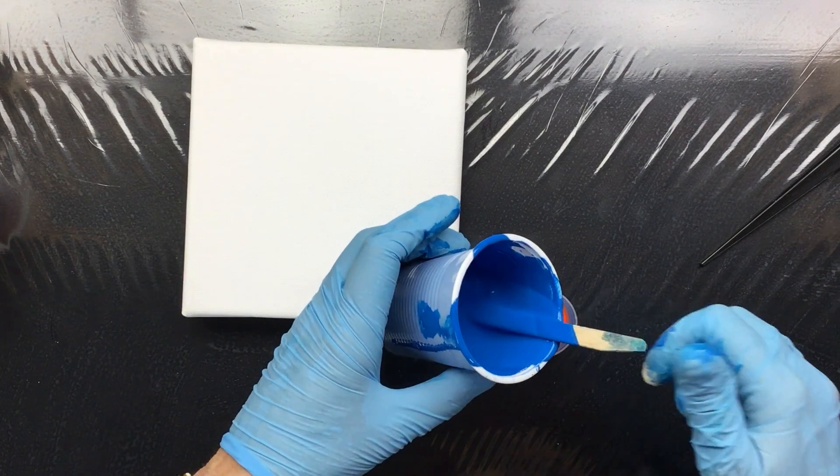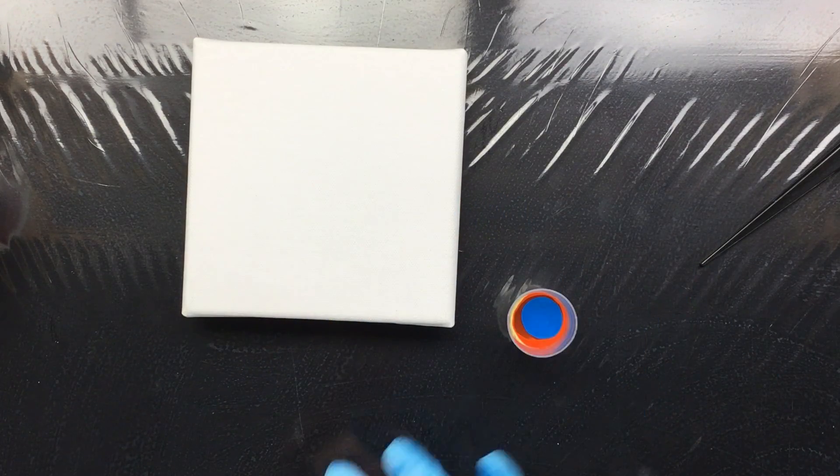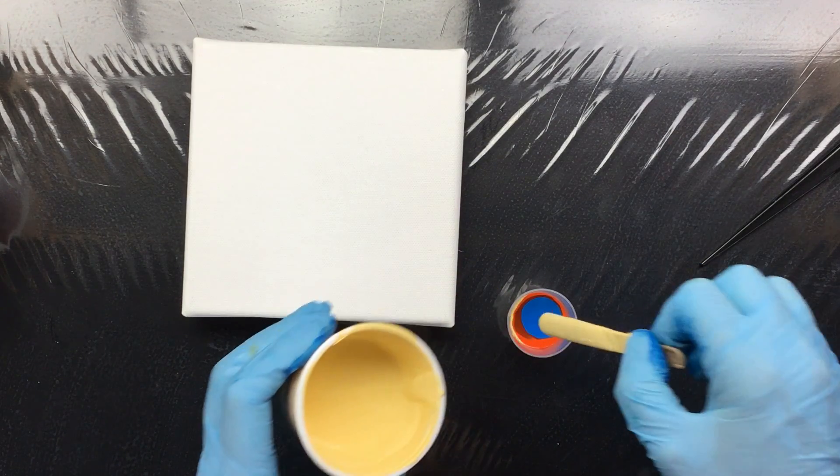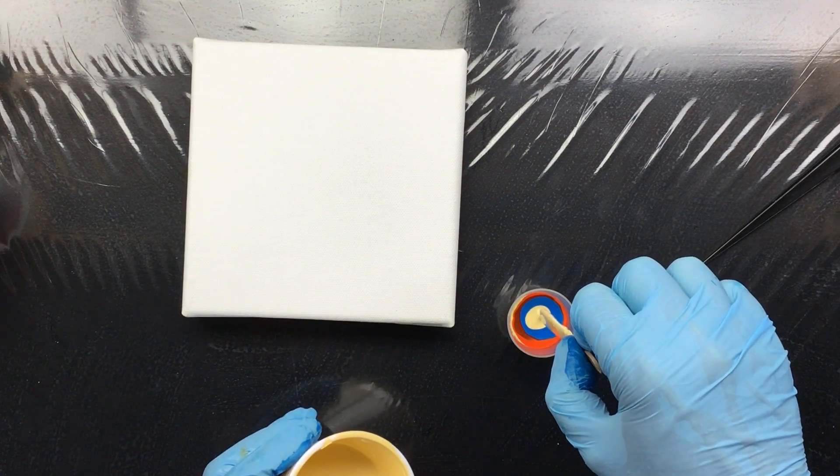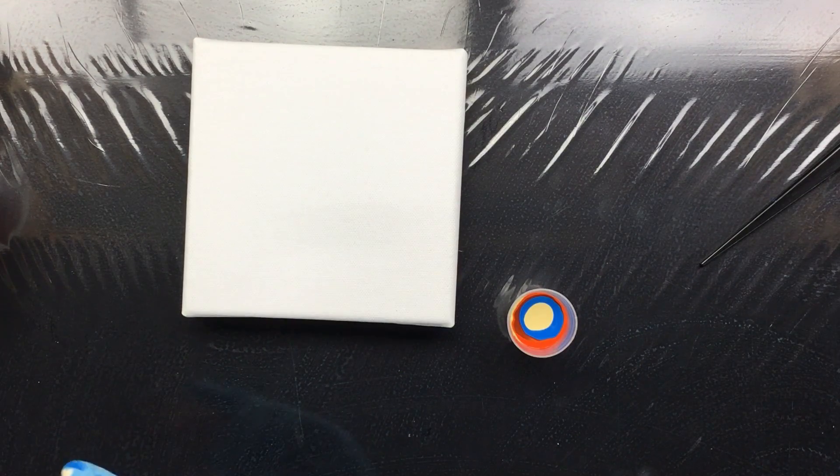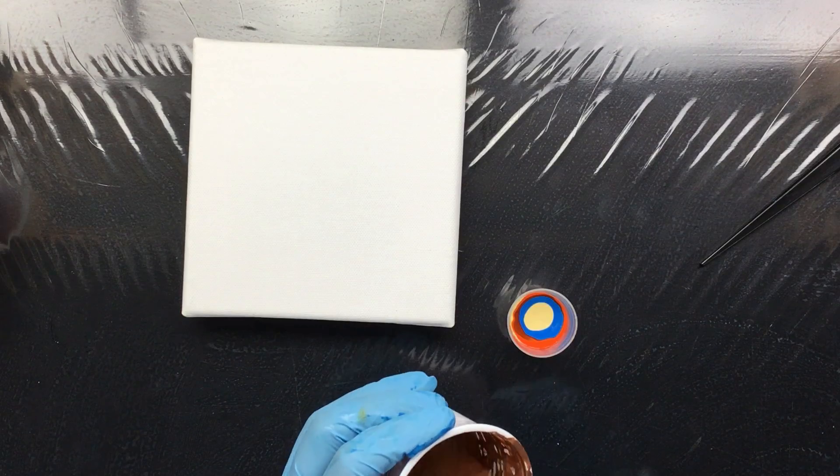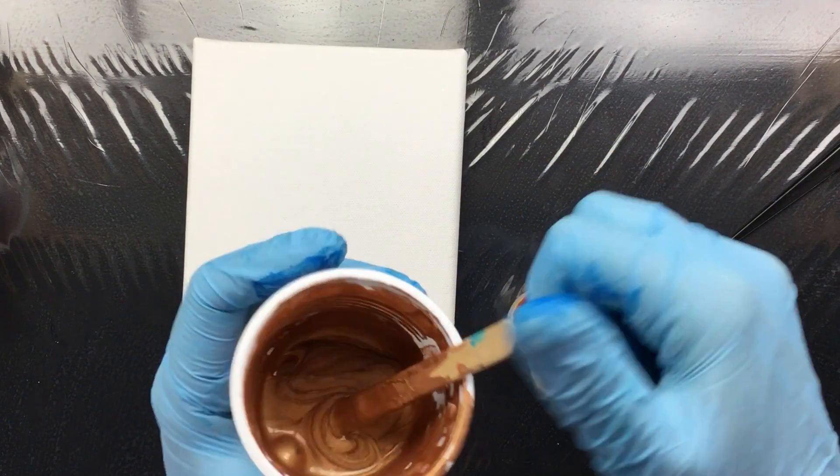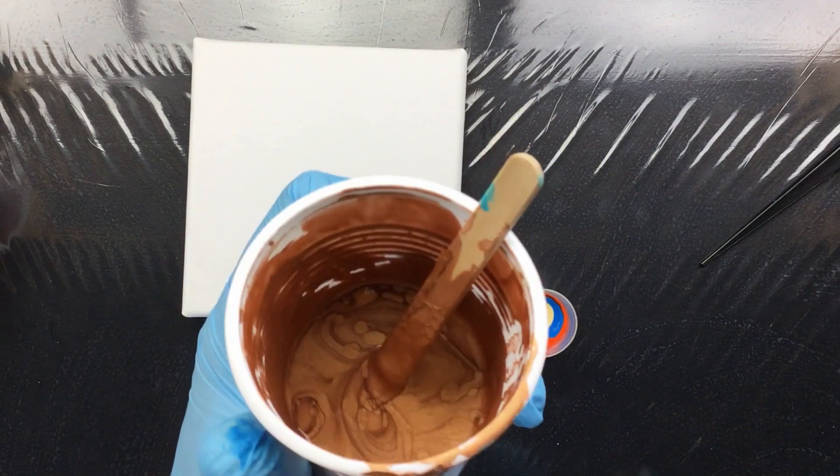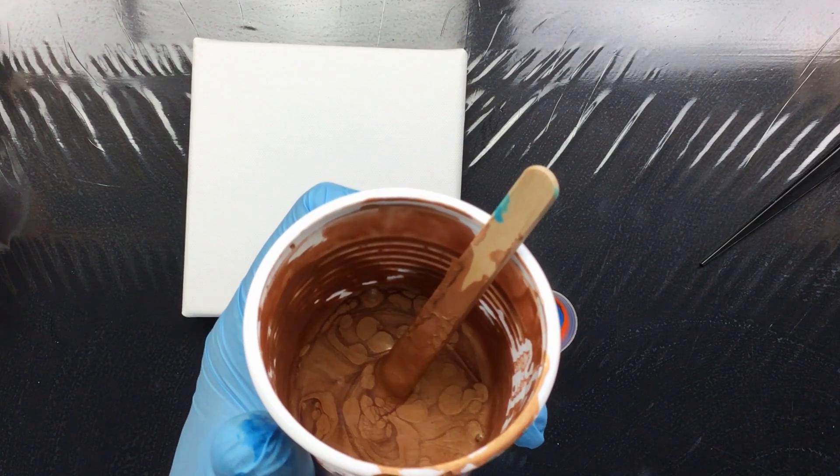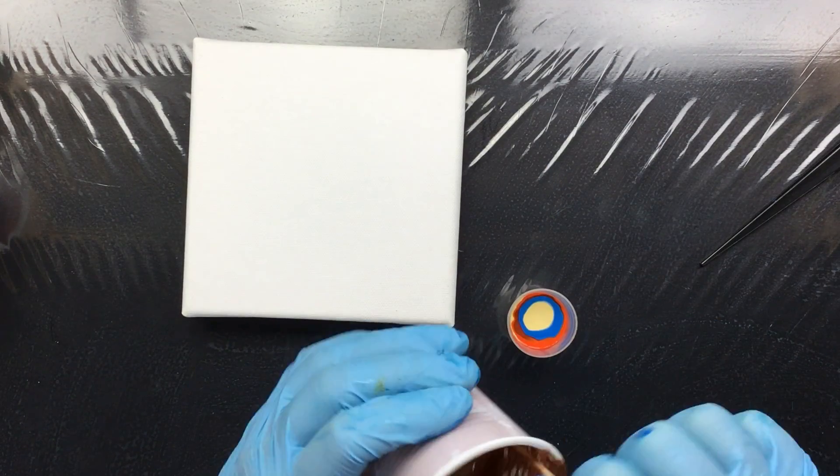And this is the cerulean blue hue. And this is all Windsor and Newton, except the metallic. I'll drip a little of this in the middle. So my metallics are Reeves. And as you can see, like I told you yesterday, when you stir it, already you see the silicone forming the cells. So the silicone pops up pretty fast.